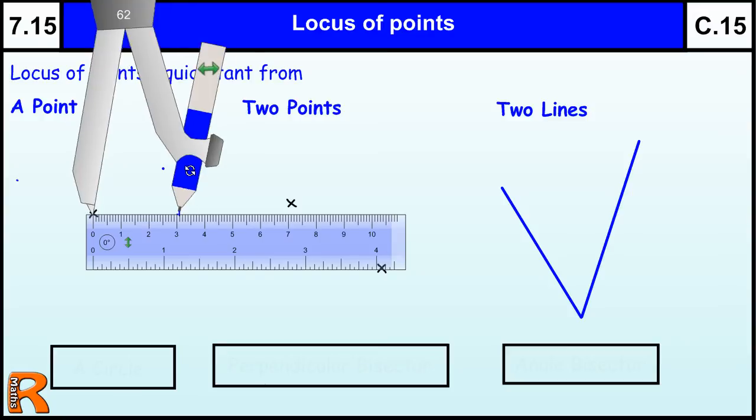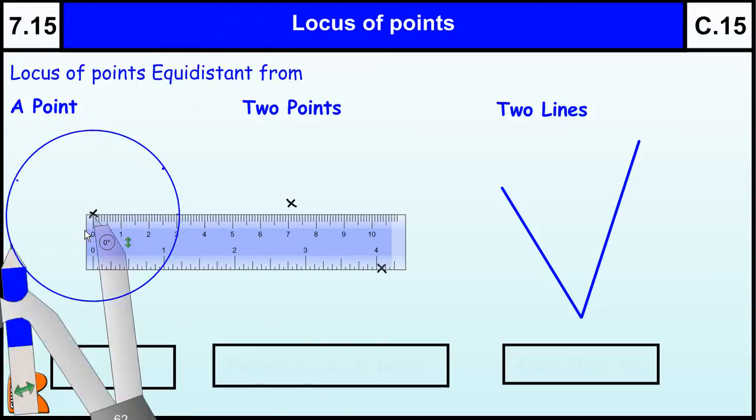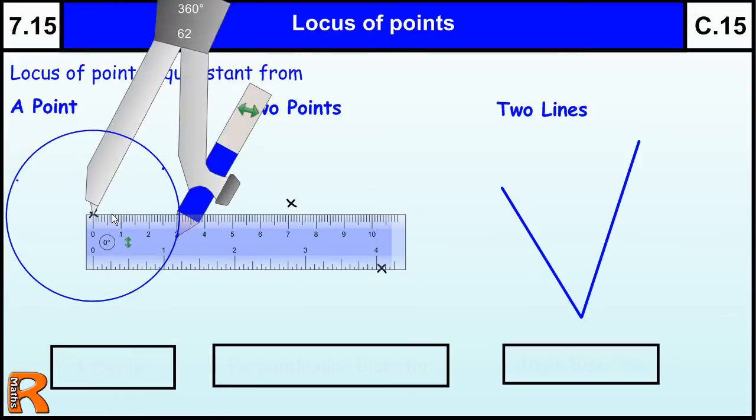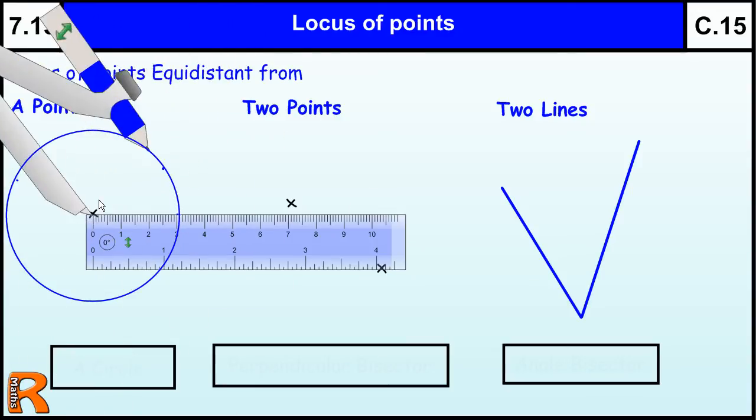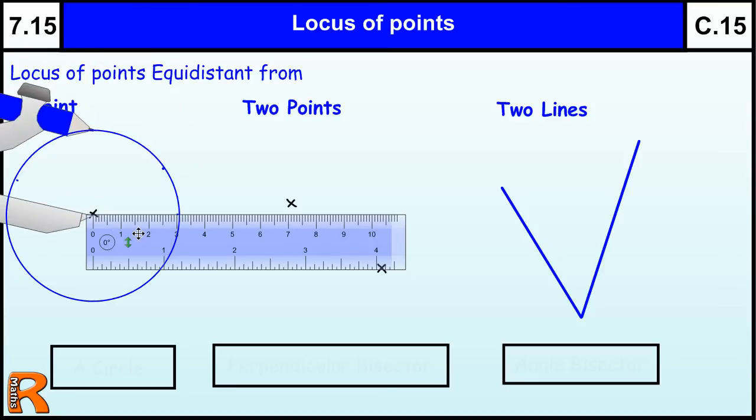OK, and then all the points on this circle will be three centimeters, because each one is three centimeters away from this center, this one point. So the locus of points equidistant from a point, in general, is always a circle.